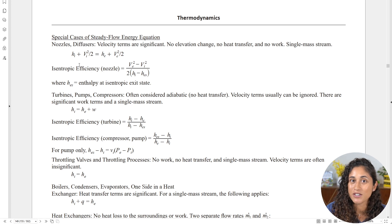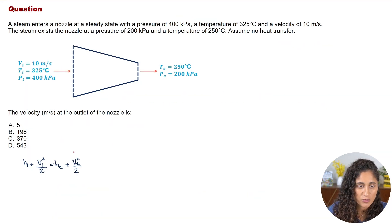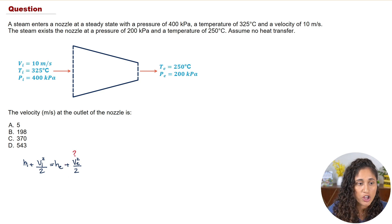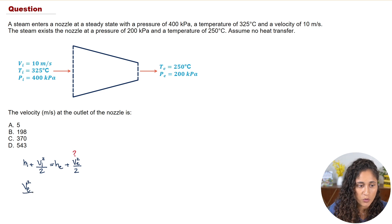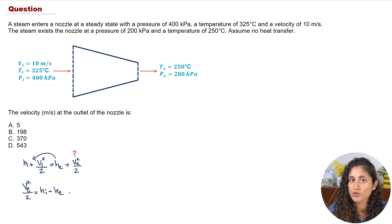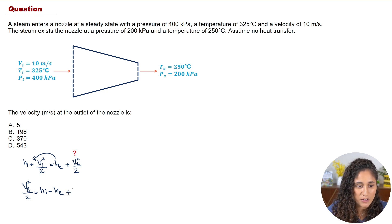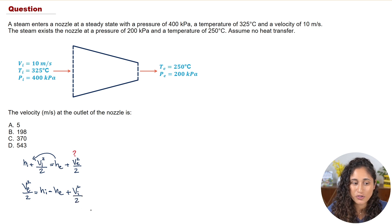Now let's write the equation down and rearrange it to solve for V_exit. We get V_E² / 2 = h_inlet − h_exit + V_inlet² / 2. We have the inlet velocity of 10 m/s, but we still need the inlet and exit enthalpies.